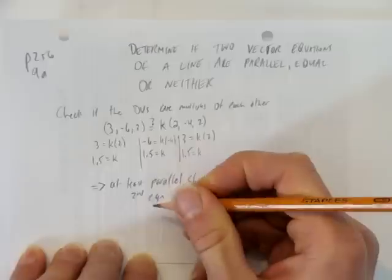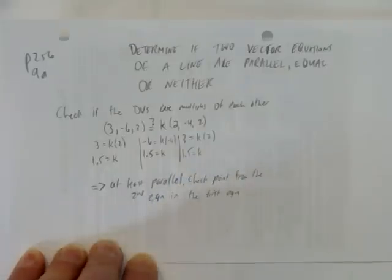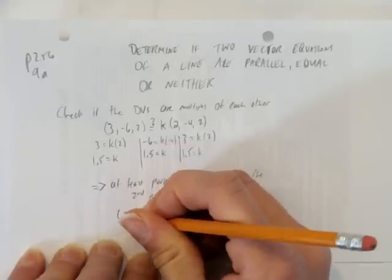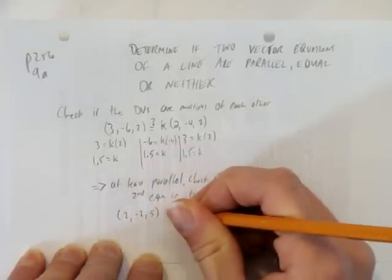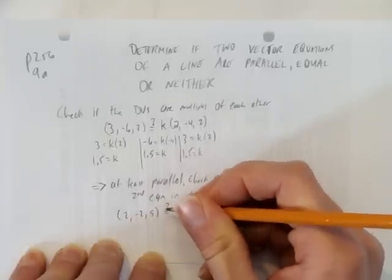is now check the point from the second equation in the first. That is to say, I want to find out the point from the second equation looking at my textbook is 2, negative 2, comma 5. And so, I'm wondering, question mark equals, I'm wondering,